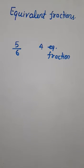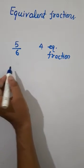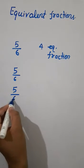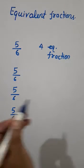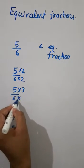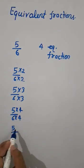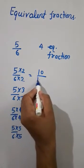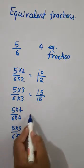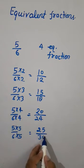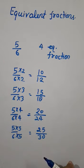One more question: the fraction is 5/6 and we need four equivalent fractions. We write 5/6 four times and multiply: by 2 gives 10/12; by 3 gives 15/18; by 4 gives 20/24; by 5 gives 25/30. These are the four required equivalent fractions of 5/6.